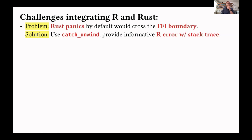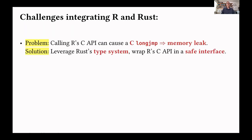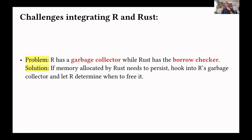Some of the challenges when interfacing R and Rust are the fact that Rust panics, by default, would cross a foreign function interface boundary. What we do is we catch-unwind and then provide a nice R error with a nice stack trace. Likewise, if you're using R's C API, you could potentially run into a long jump, which would then lead to a memory leak in Rust. We solve that by leveraging Rust's type system to provide a nice, safe interface over R's C API. Also, R has a garbage collector, whereas Rust has a borrow checker. We end up just letting R manage the memory, and we hook into R's garbage collector to free memory from Rust.